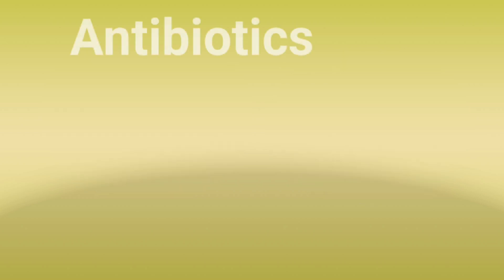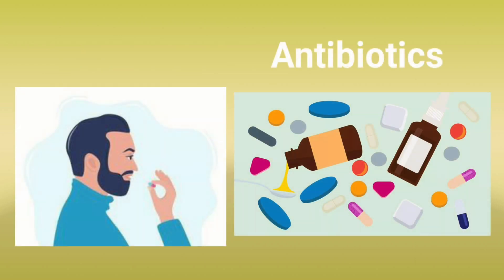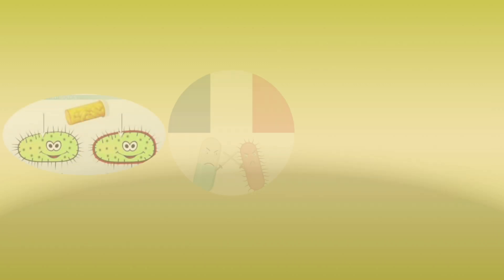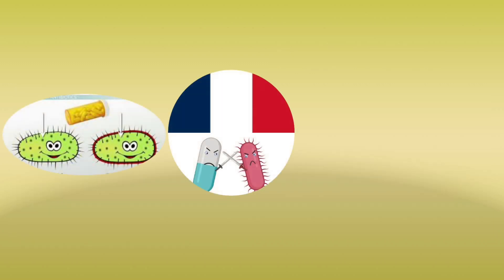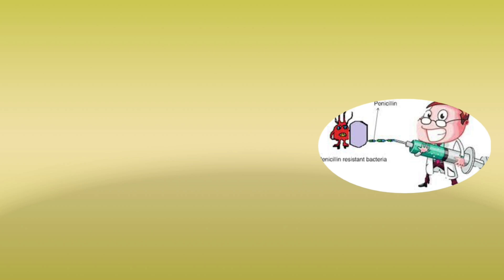Antibiotics: the bacteria that cause diseases are pathogens. Sometimes it is necessary to take medicines such as antibiotics. These medicines can stop the growth of resistant bacteria. Antibiotics can kill disease-causing bacteria. You should only take antibiotics when a doctor has prescribed them.